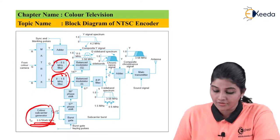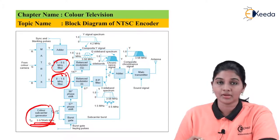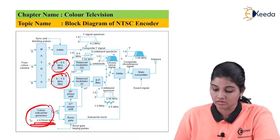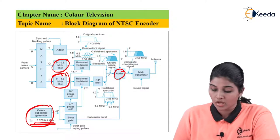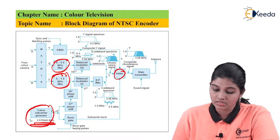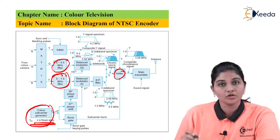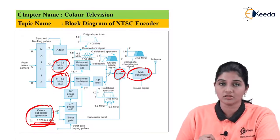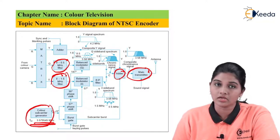After the balance modulator, the signals are combined using an adder along with a bandpass filter, which is used for the I signal. The Q signal is directly added with the I signal. At the adder in the NTSC encoder, we receive three different inputs: the chrominance signal, which is a mixture of I and Q signals, and the composite Y signal obtained from the matrix. The output of the adder is then given to the main transmitter, which also takes a sound signal as a second input, and the signal is transmitted via a transmitter antenna.